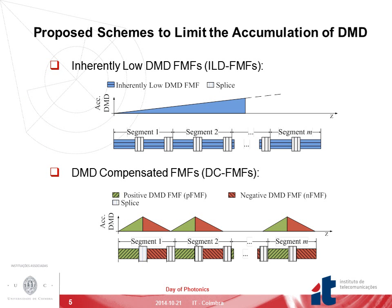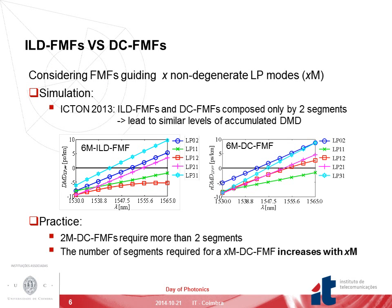Two schemes have been proposed to limit the accumulation of DMD: the use of intrinsically low DMD FMFs, and the use of DMD-compensated FMFs composed by segments with alternating DMD sign. Previously, we have already studied ILD-FMFs and DC-FMFs, and found that for two segments both schemes lead to similar levels of accumulated DMD in optimum conditions. However, in practice more than two segments will be required, and since the number of segments increases with the number of modes, DC-FMFs will not be suitable for deployment. Therefore, in this study we will consider only ILD-FMFs.